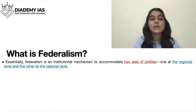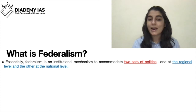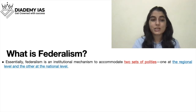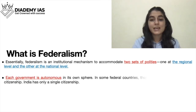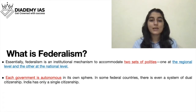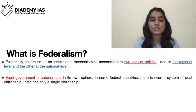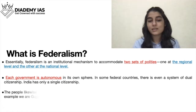Federalism is an institutional mechanism to accommodate two sets of polities - one at the regional level and the other at the national level. Each government is autonomous in its own sphere. In some federal countries there is even a system of dual citizenship, but India has only a single citizenship.